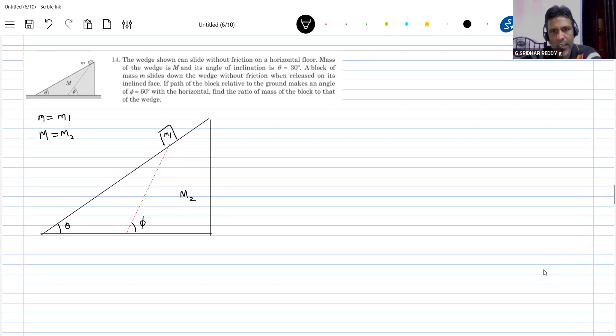Now what is the state of wedge? The wedge will also move. What is asking for the ratio of mass of the block to that of the wedge is asking the ratio of M1 by M2. He has given theta and phi also.